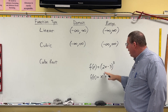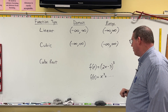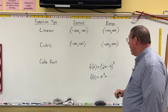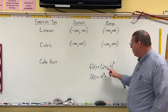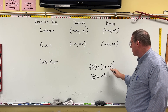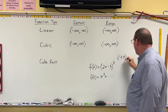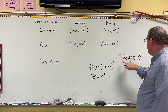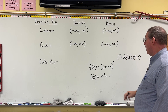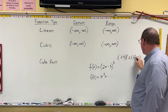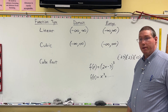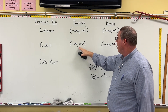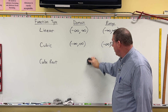You can plug anything into a cubic function — positives, negatives, and zero. For example, if I put in negative 10, I get negative 20 minus 3, which is negative 23. Negative 23 cubed: negative 23 times negative 23 is positive, but then multiplied by negative 23 again gives a negative result. If all inputs are positive, the result is positive. So we can get positive answers, negative answers, and zero. Therefore, cubic functions have a domain and range of all real numbers, or negative infinity to positive infinity.